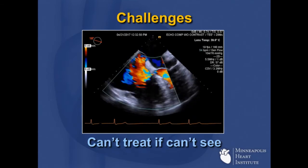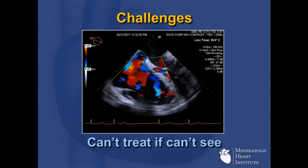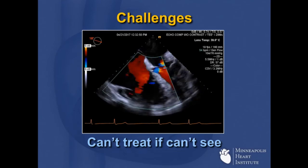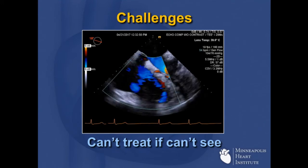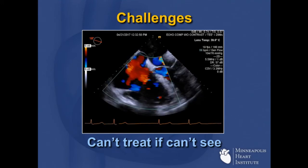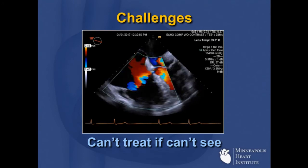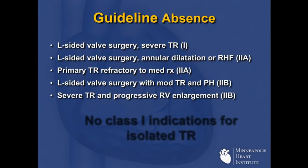But there are challenges. As Richard showed earlier, you simply can't treat what you can't see. This patient was referred to us — there's no doubt about the severity of the TR — but you can't see the leaflets at all. There's just way too much shadowing. Richard tried everything, stood the patient on his head to get different images, and they all looked the same. I had to tell him it's either surgery or palliation, unfortunately.